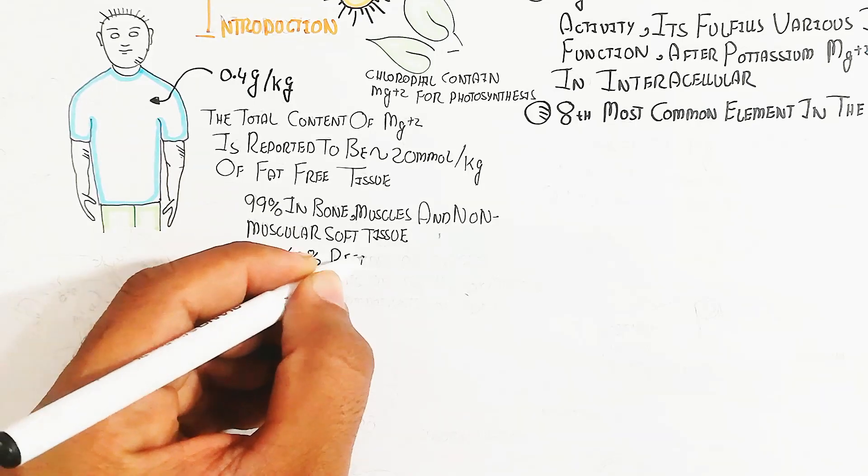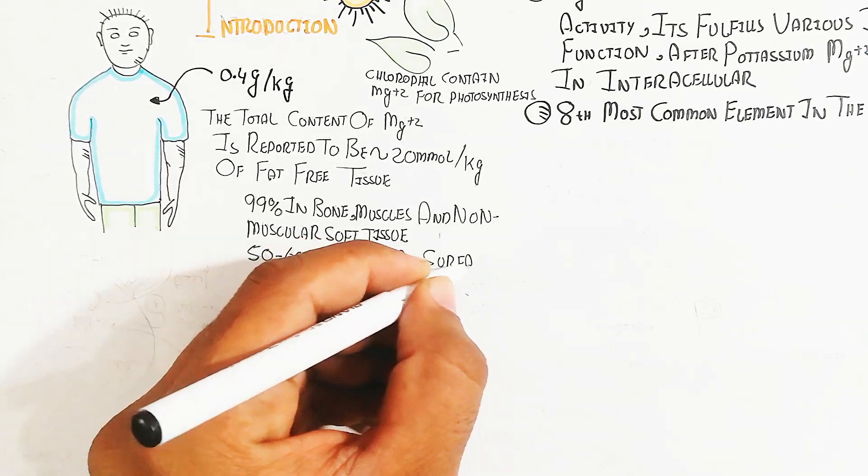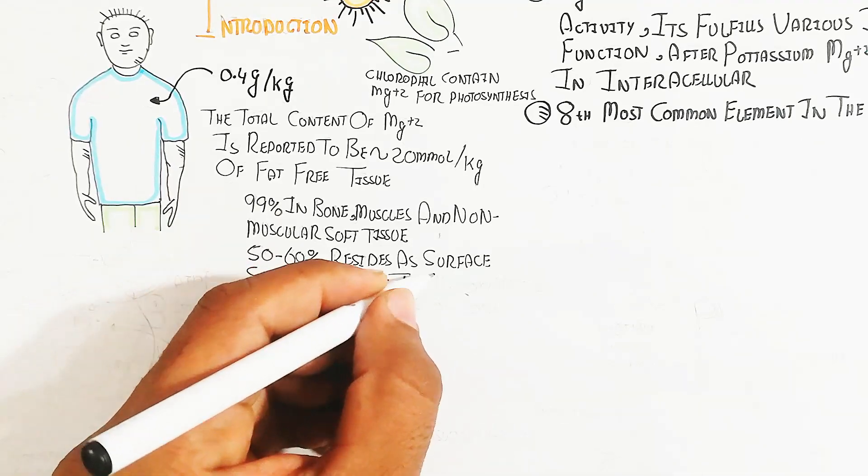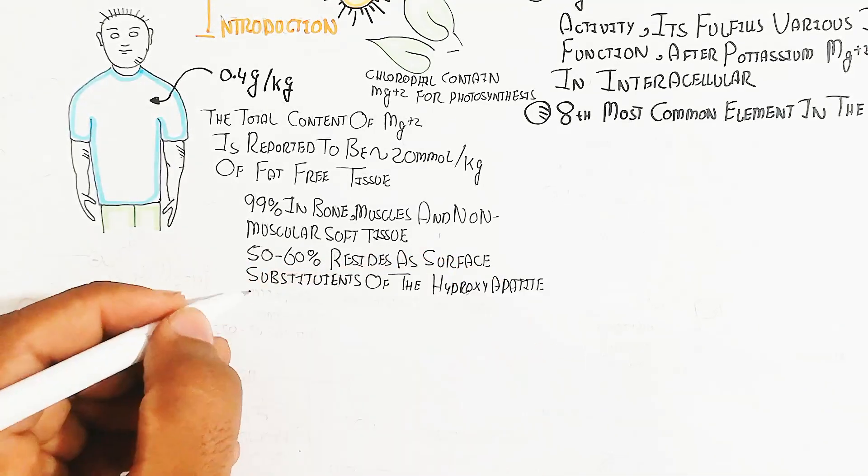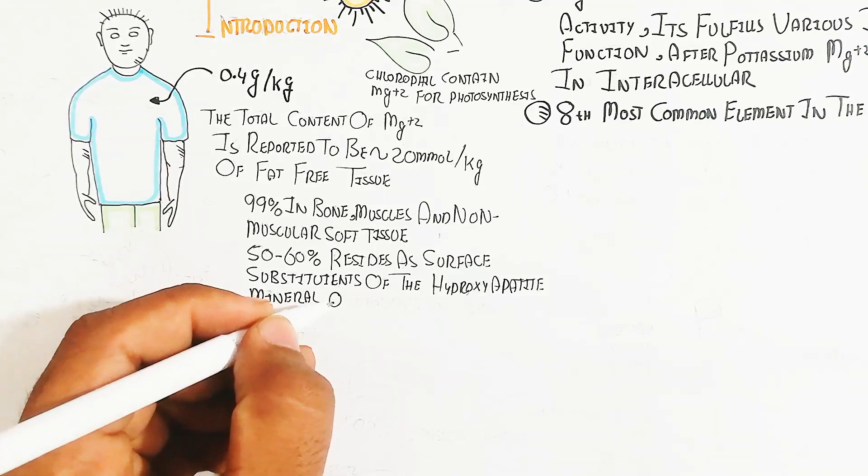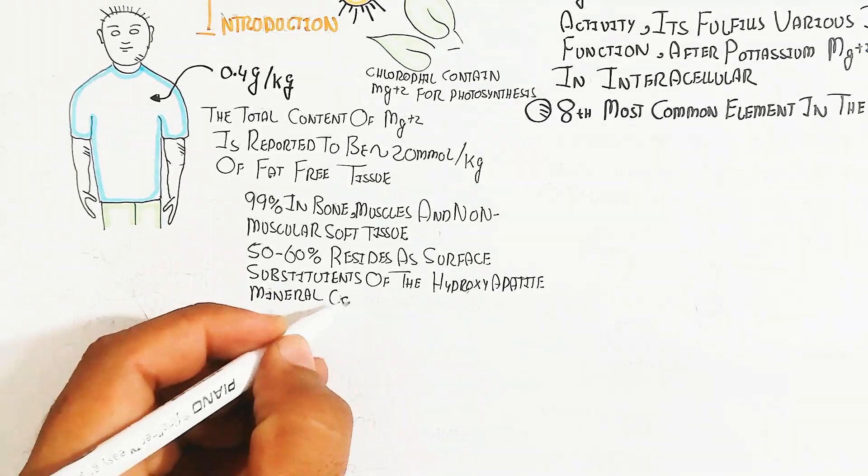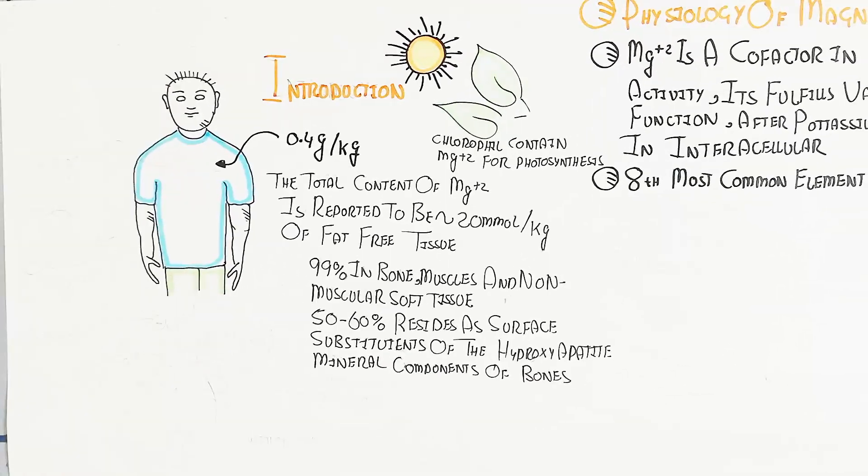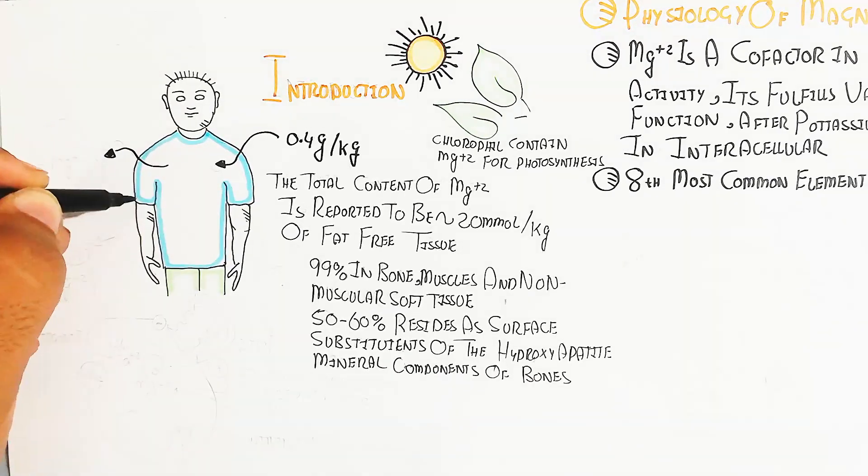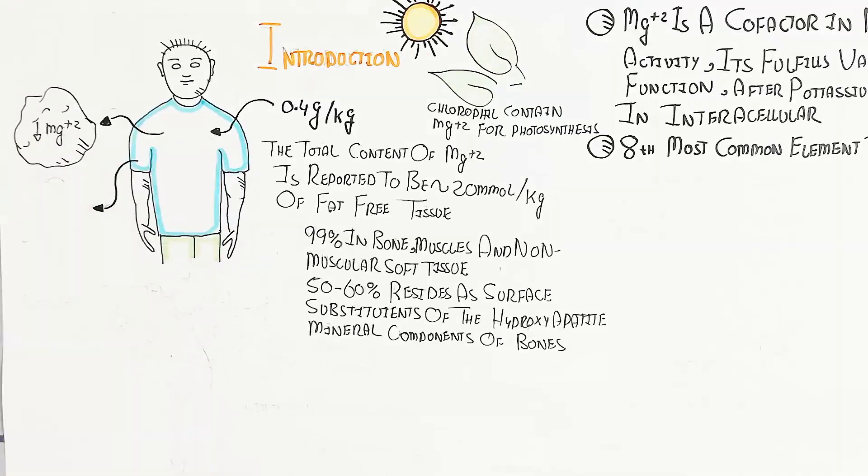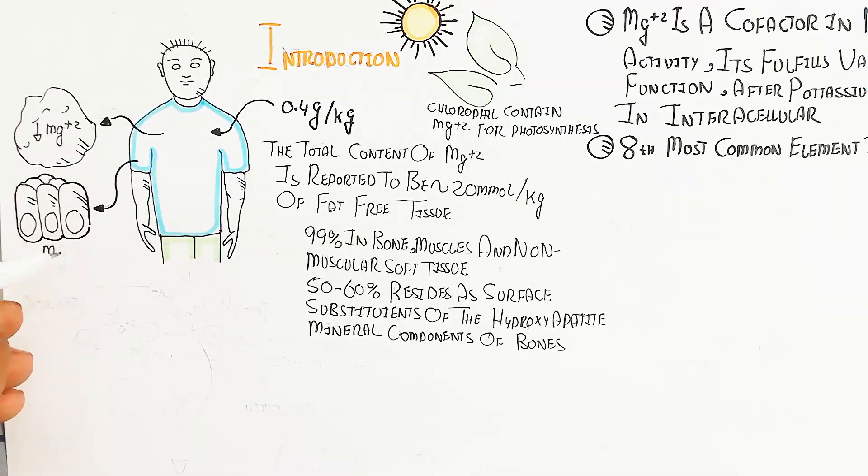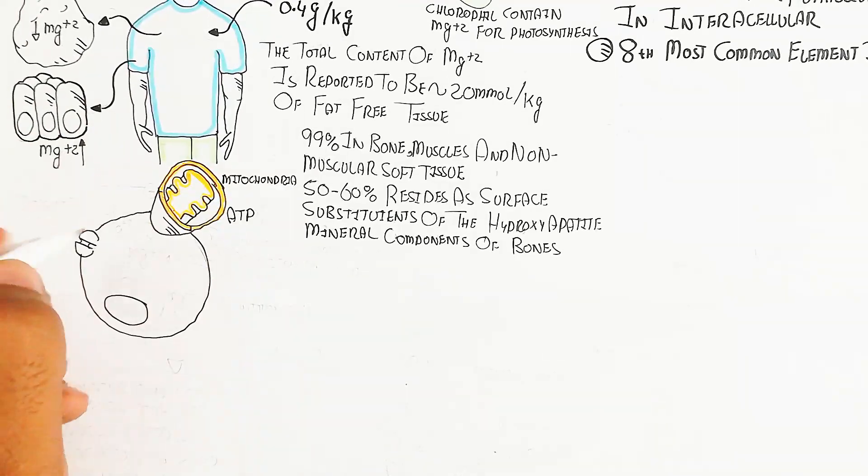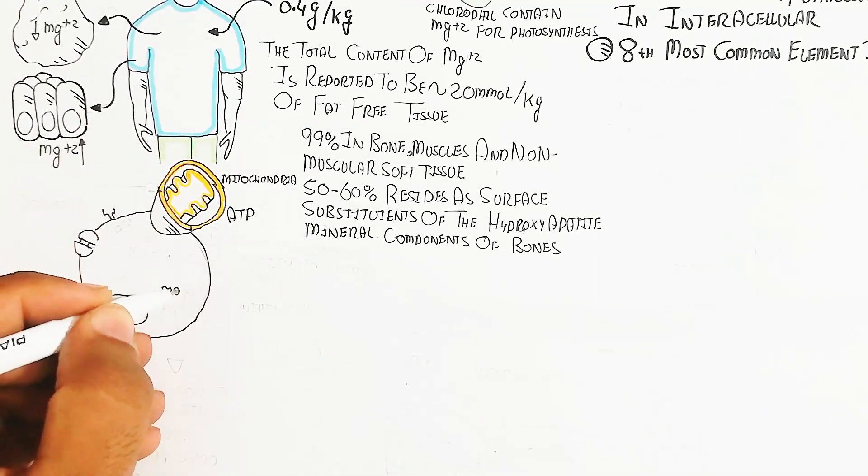50-60% of magnesium resides as a surface substituent of the hydroxyapatite mineral compound of bones. The bones contain hydroxyapatite mineral compound. Fat contains less magnesium, particularly white fat, not brown fat, but magnesium will be high in fat-free tissue.